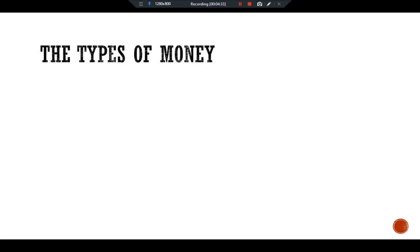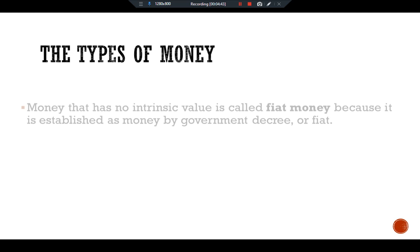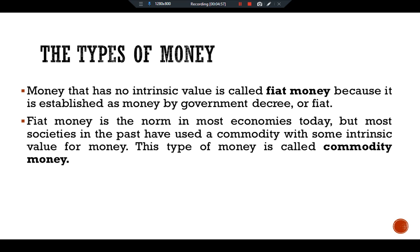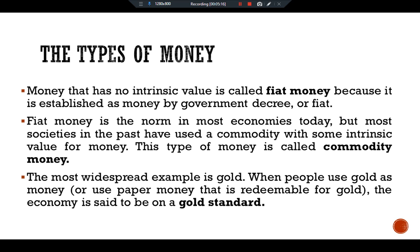Money takes many forms and types, but here we discuss the most commonly discussed types. Money that has no intrinsic value is called fiat money, because it is established as money by government decree or fiat. Most societies in the past used a commodity with some intrinsic value as money — this is called commodity money, and the most widespread example is gold. When people use gold as money, or use paper money redeemable for gold, the economy is said to be on a gold standard. Gold is a form of commodity money because it can be used for various purposes such as jewelry and dental fillings.